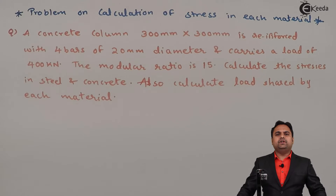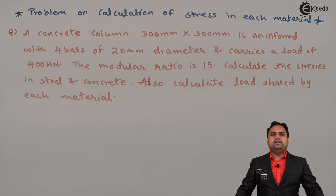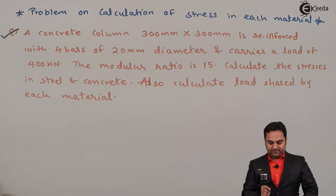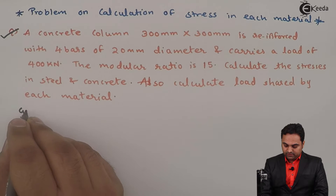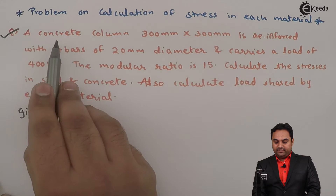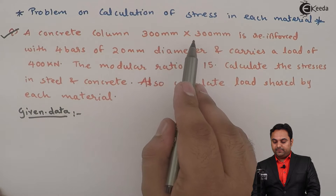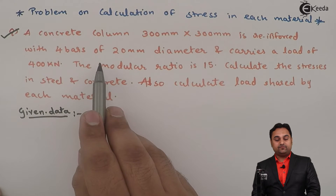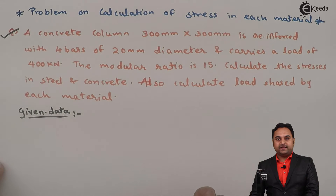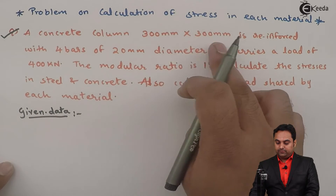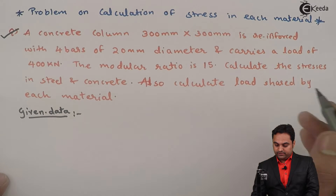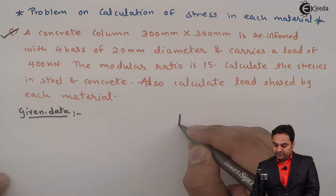Hello friends, in this video we are going to see a problem in which we will calculate stress in each material. Here is the question. First we will write the data — what is given. It is given that a concrete column 300 mm × 300 mm is reinforced with four bars of 20 mm diameter. We need to draw a diagram to understand this. The column is square because it is 300 × 300.